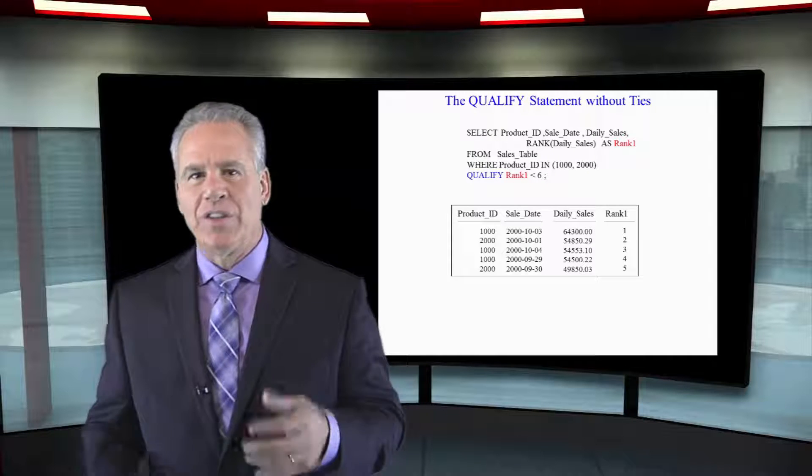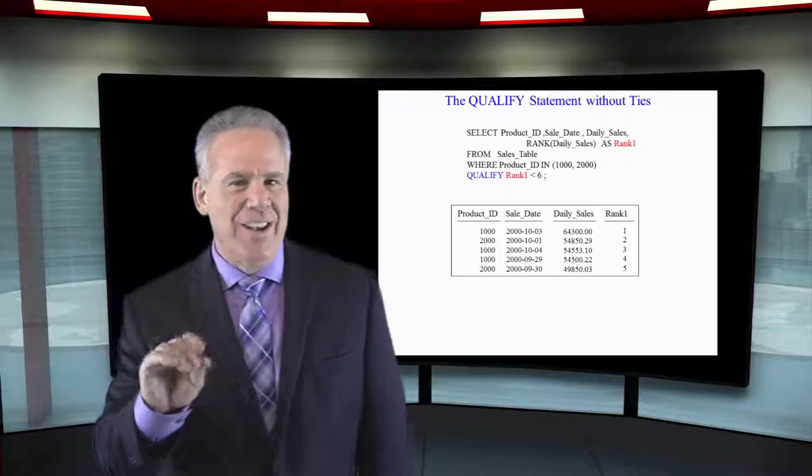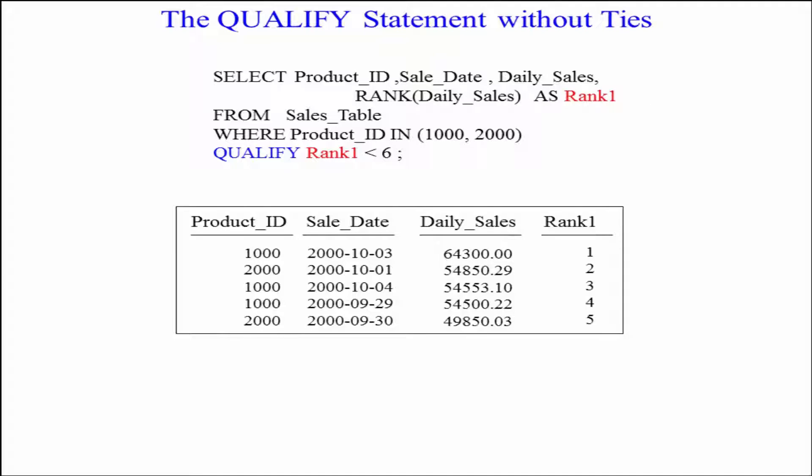The next two pictures are designed to show you a little bit more about how rank works. So take a look at this. We're going to rank and we're going to qualify that rank less than six, and we're going to get ranks one, two, three, four, five. We have no ties in descending order down.